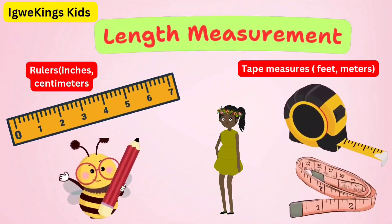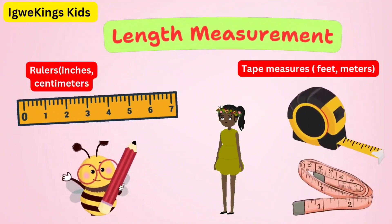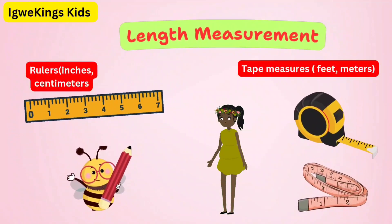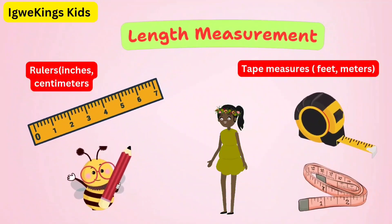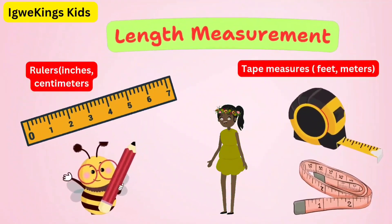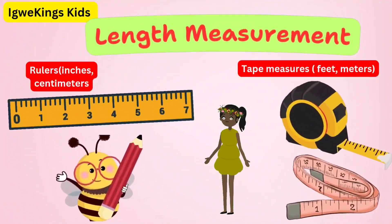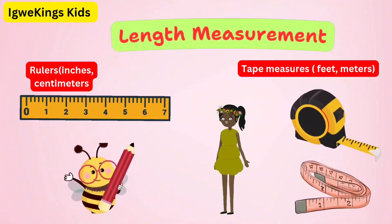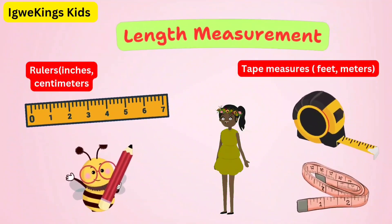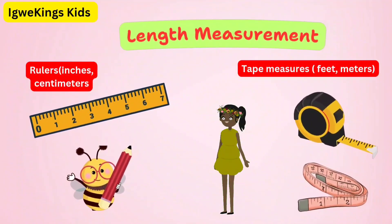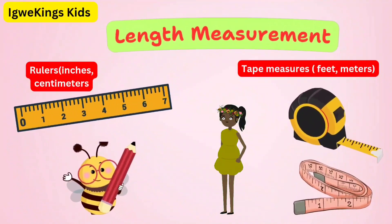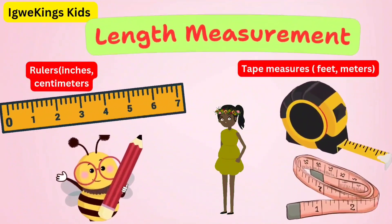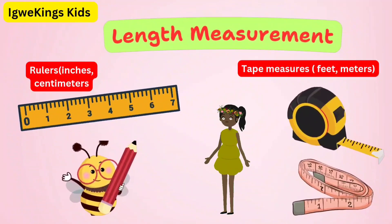We can measure length using: rulers — inches and centimeters — great for measuring small things like pencils or books; tape measures — feet and meters — great for measuring bigger things like rooms or furniture; and yardsticks — yards — useful for measuring really big things like a garden or playground.